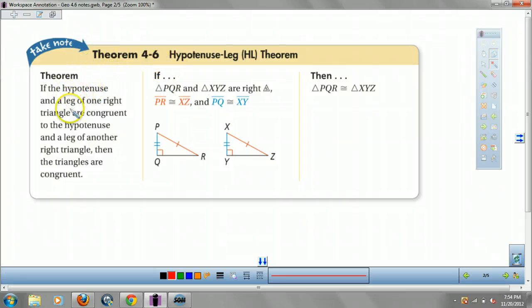If the hypotenuse and a leg of a right triangle are congruent, then the triangles are congruent. So that means if PR is congruent to XZ, and PQ is congruent to XY, and the angle you know for angle side-side is a right angle, then the two triangles are congruent.